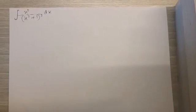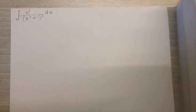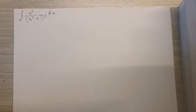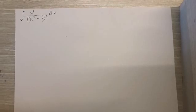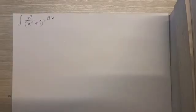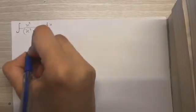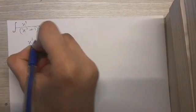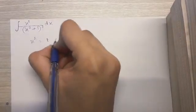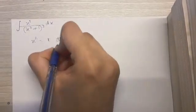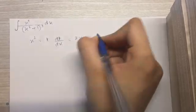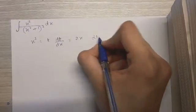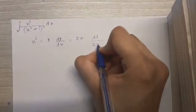Hey guys, welcome back to my channel. Today we'll be solving the integral of x cubed upon x squared plus one, the whole cube. So let's begin. What I'm going to do is keep x squared as t, so dt/dx becomes 2x, and dx can be written as dt upon 2x.